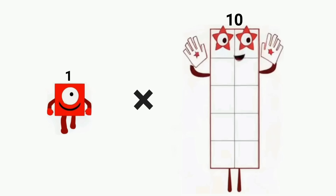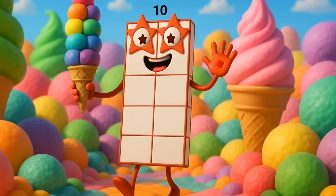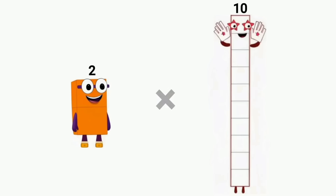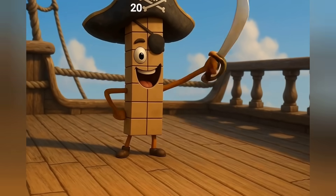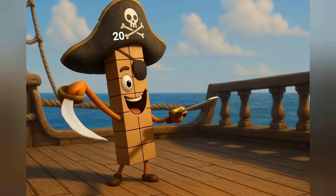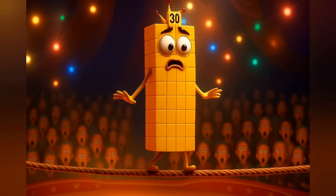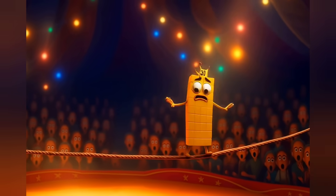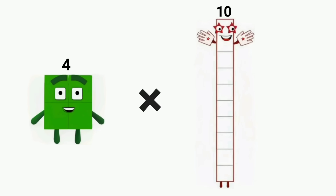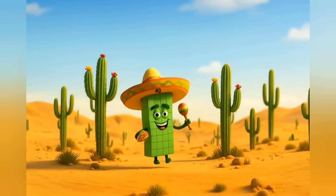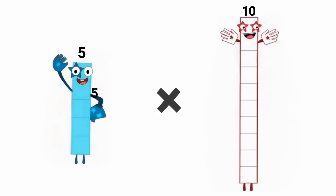One times ten equals ten. Two times ten equals twenty. Three times ten equals thirty. Four times ten equals forty. Five times ten equals fifty.